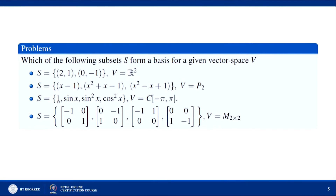For the third example, one element can be written as sin²x + cos²x, which is a linear combination of the other two elements. So this set is linearly dependent and will not be a basis of this vector space.